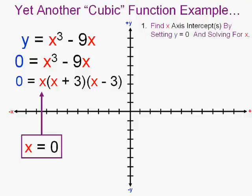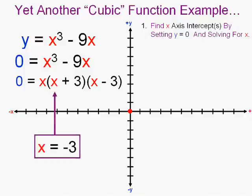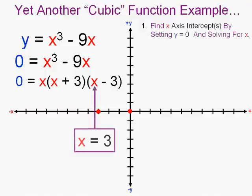One of them is where x is zero. Another one, what makes this zero is negative three. So there's another x-intercept. And the other one is where x is three. So those are my three x-intercepts or roots if you would.